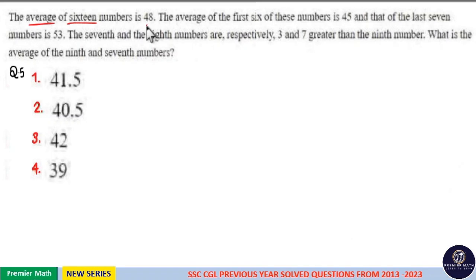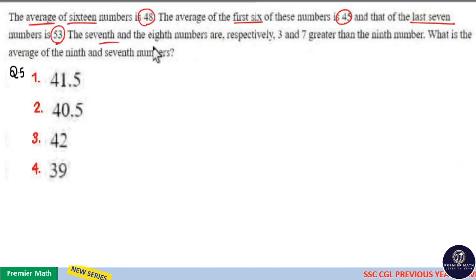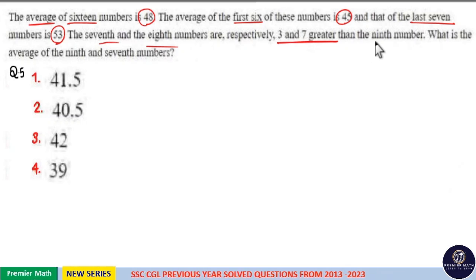Average of 16 numbers is 48. The average of first 6 of these numbers is 45 and that of the last 7 numbers is 53. The 7th and 8th numbers are respectively 3 and 7 greater than the 9th number. What is the average of 9th and 7th numbers?